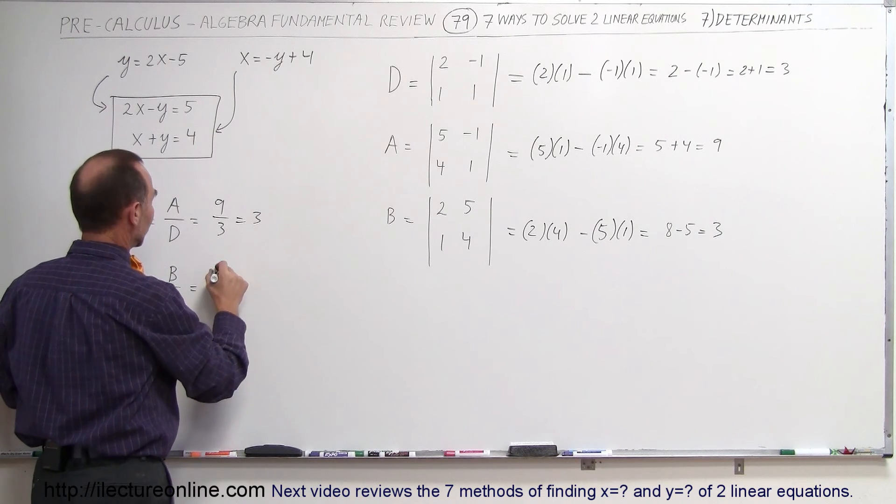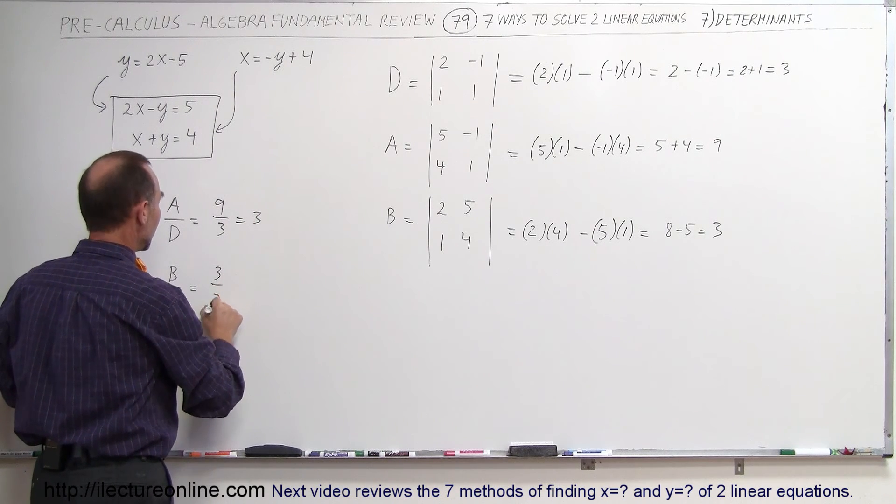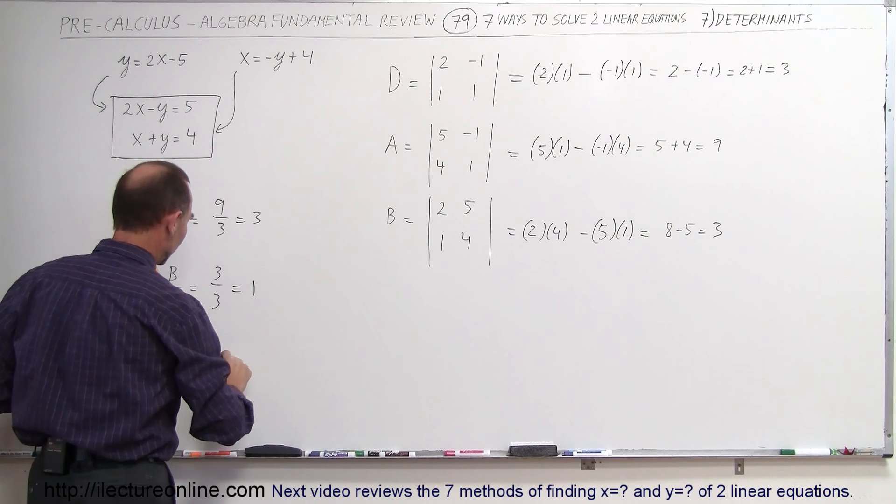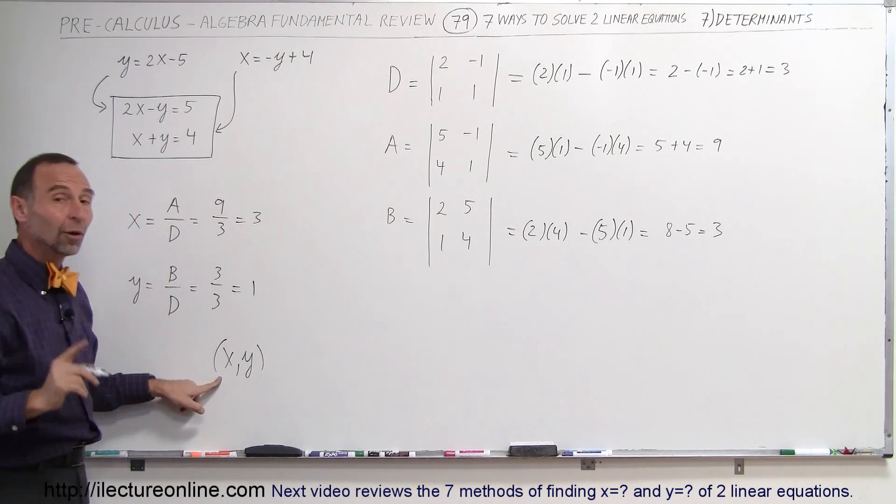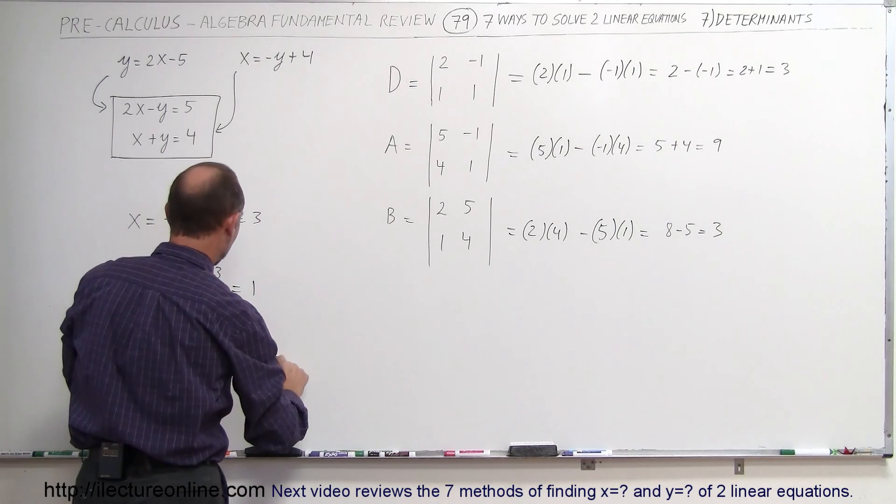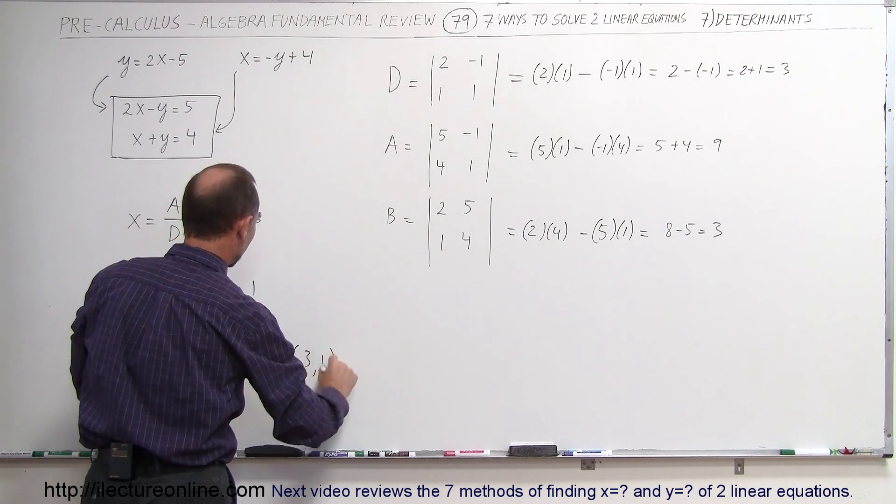And the y value is B, which is 3, divided by D, which is 3, which is equal to 1. And so therefore the solution, the x, y coordinates of the point where the two lines cross is equal to 3 and 1.